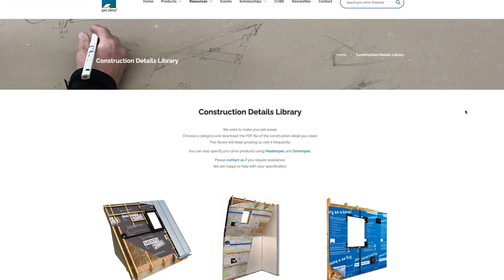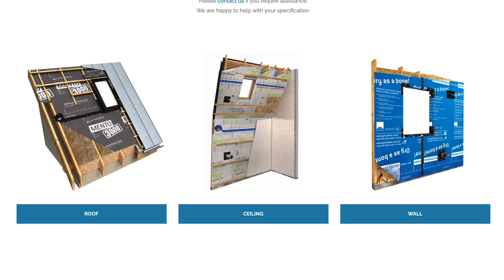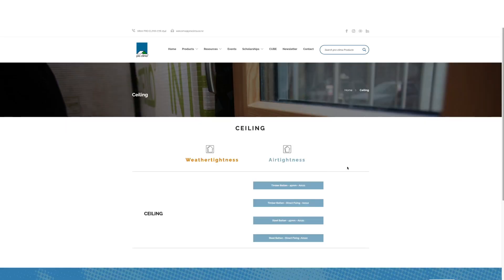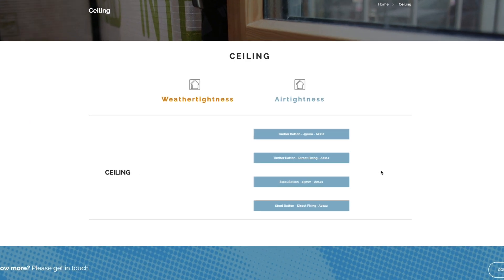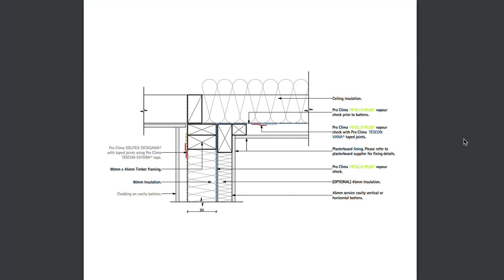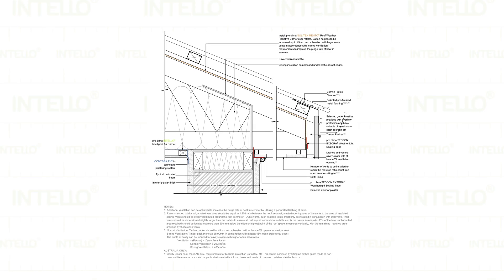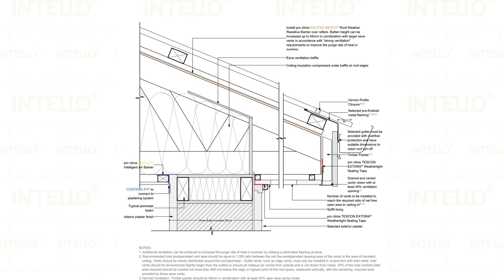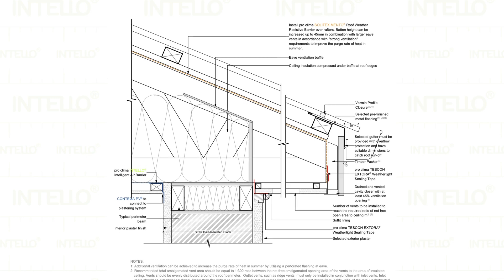We have a comprehensive construction detail library now available on the ProClimer website, and this will assist you to detail our products. It has details relating to walls, roofs, and window and door connections. We also have a section which looks at other types of construction, including ICF or insulated concrete formwork, SIP panels or structurally insulated panels, and even a section on straw bale construction, showing you how to continue the air tightness layer on the inside of these different types of constructions.